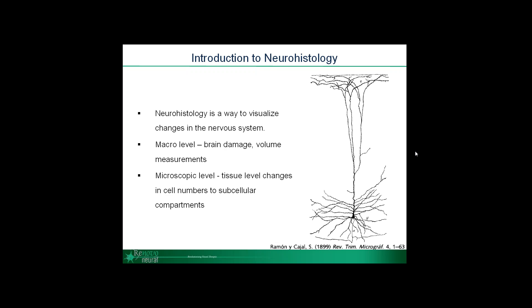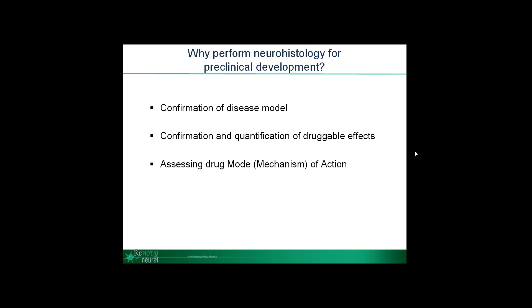At the fundamental core of any study into neurodegenerative disease is a simple question: how do we protect neurons? Histology allows us to visualize neurons in the context of their microenvironment during disease. The bigger, harder question is what's causing injury and how do we protect against it. We can start to use neurohistology to answer some of those questions during preclinical studies.